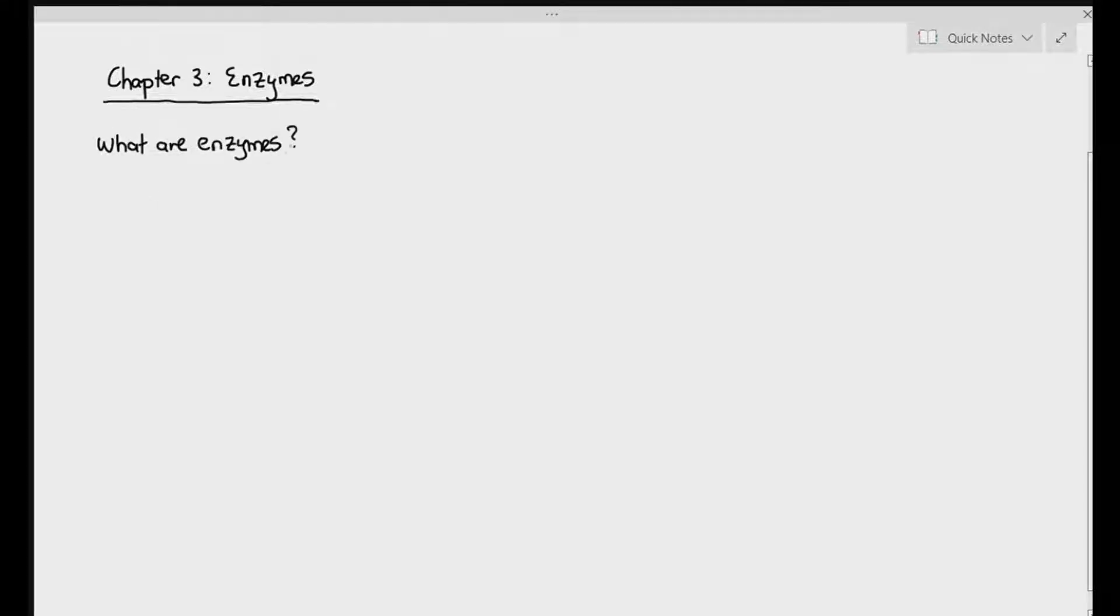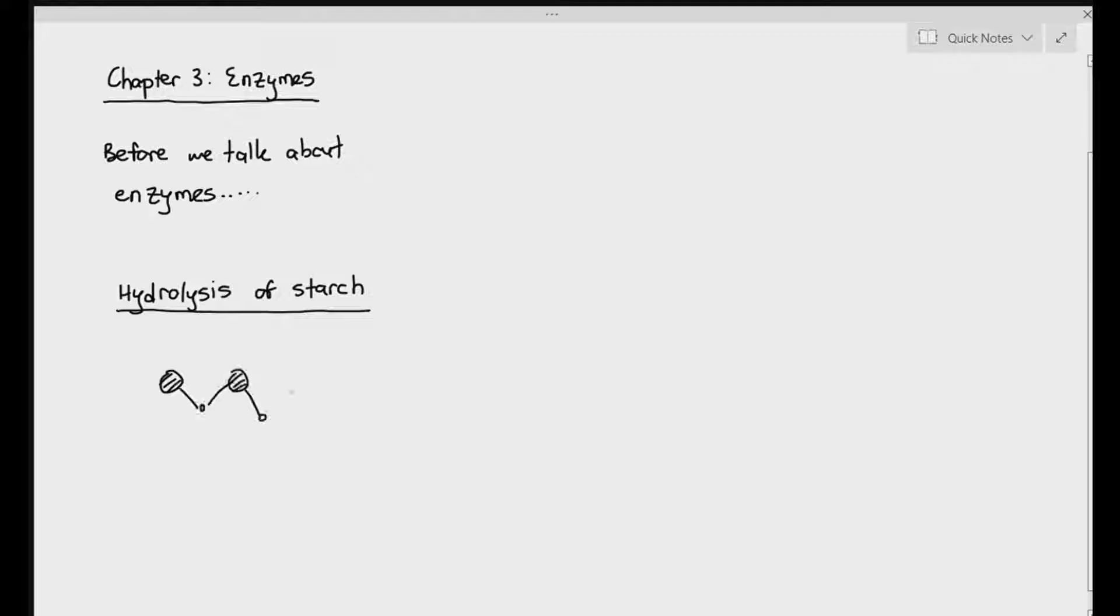What we have to cover here is what are enzymes basically. Before we talk about enzymes though, I just want to give you an example of a situation. In chapter 2, you learned about something called starch. There were two types of starch molecules, amylose and amylopectin.